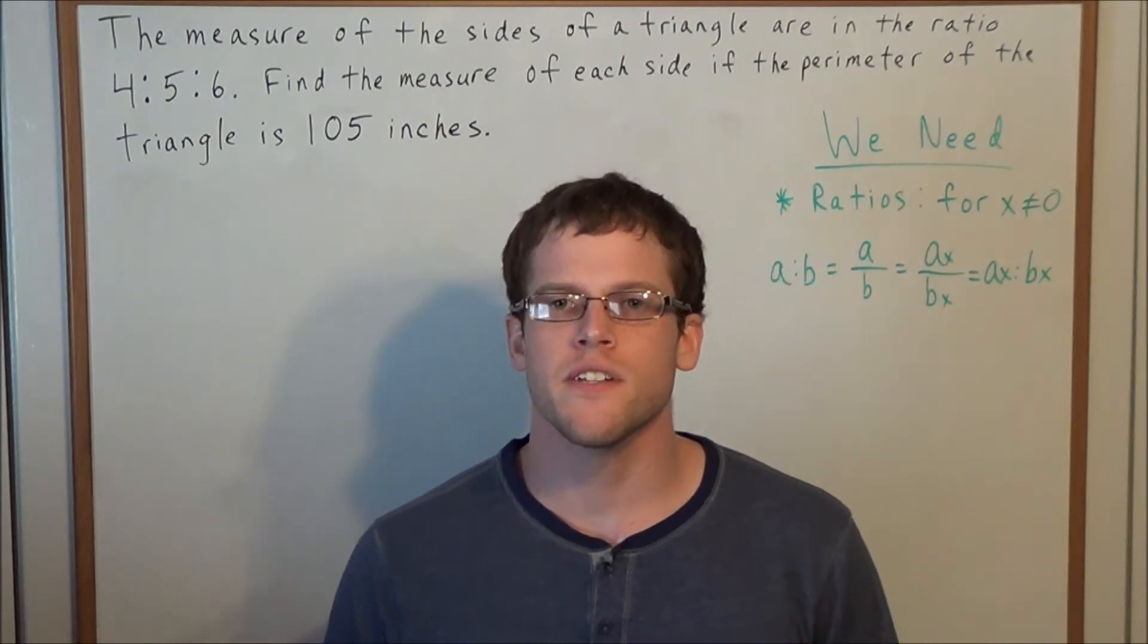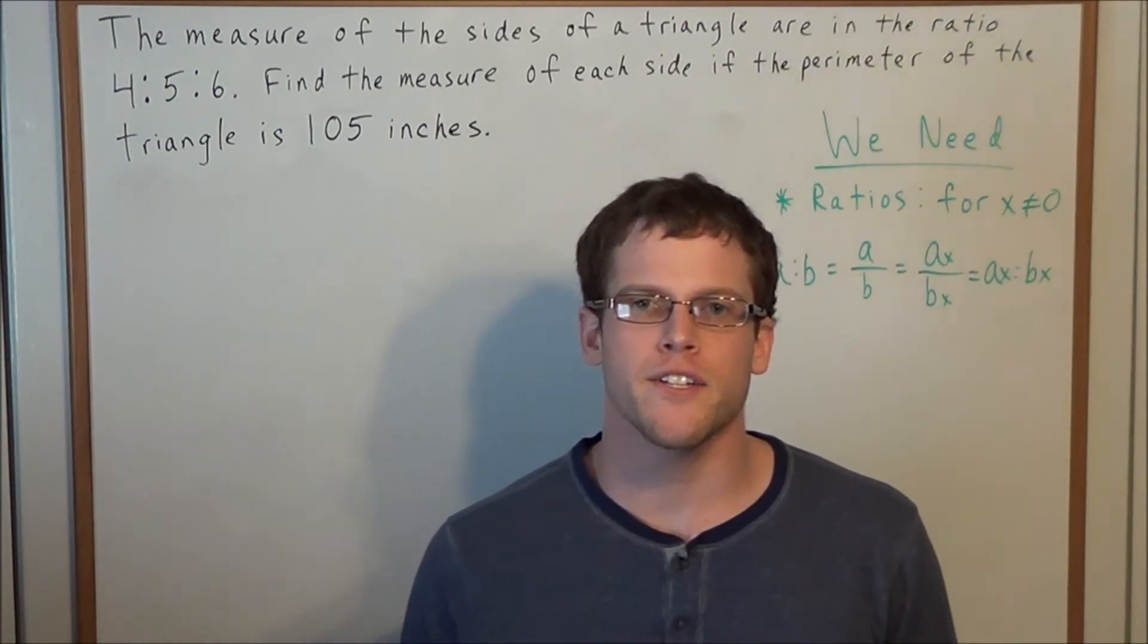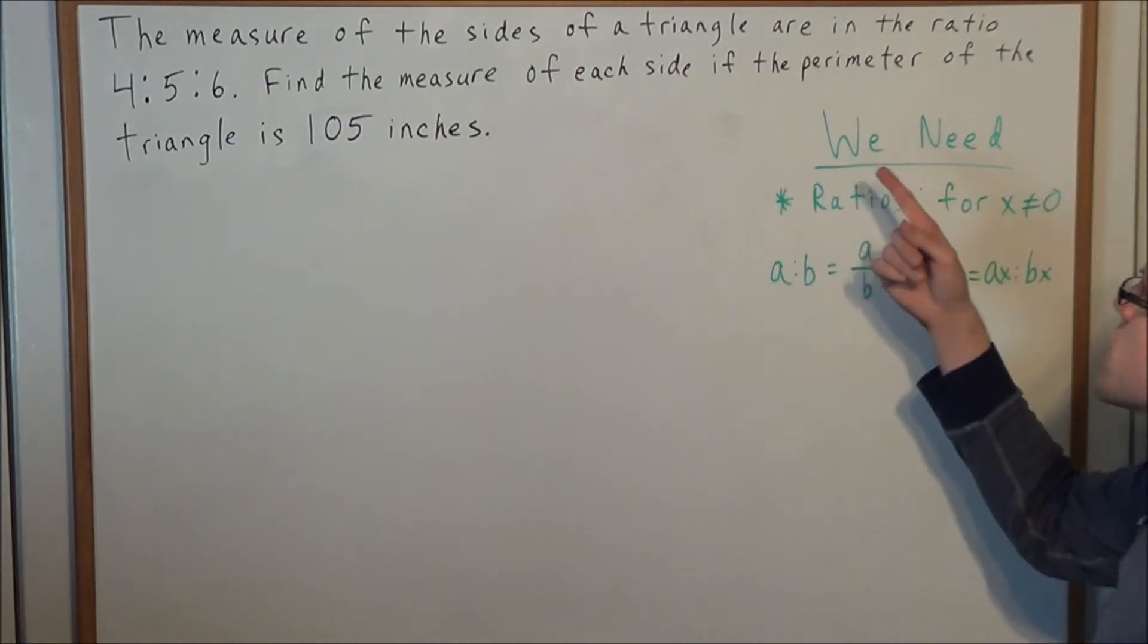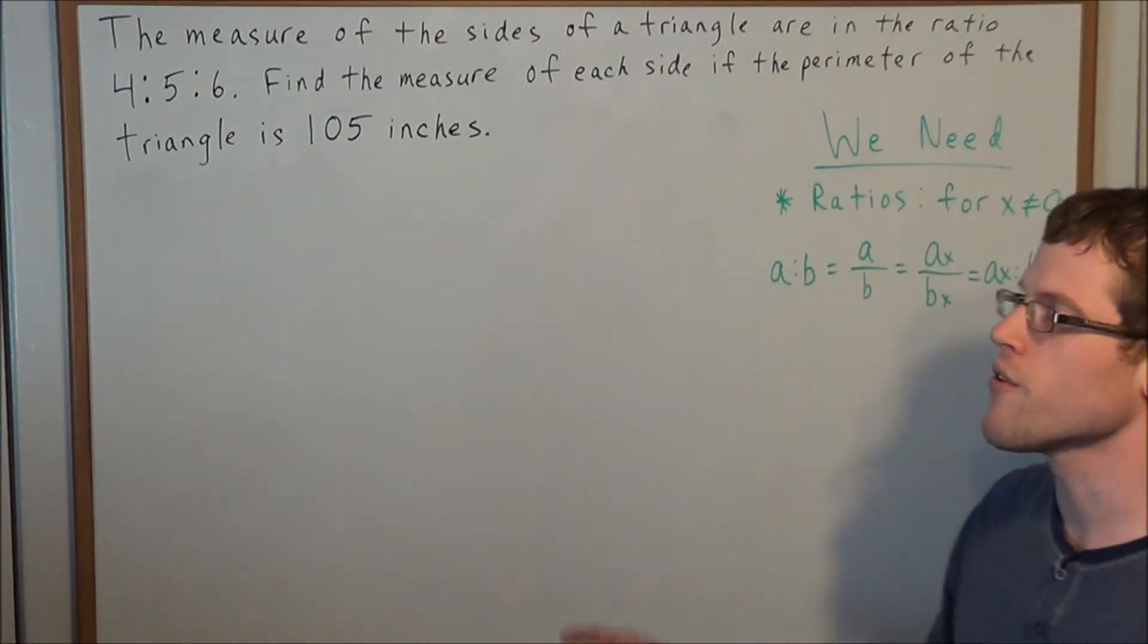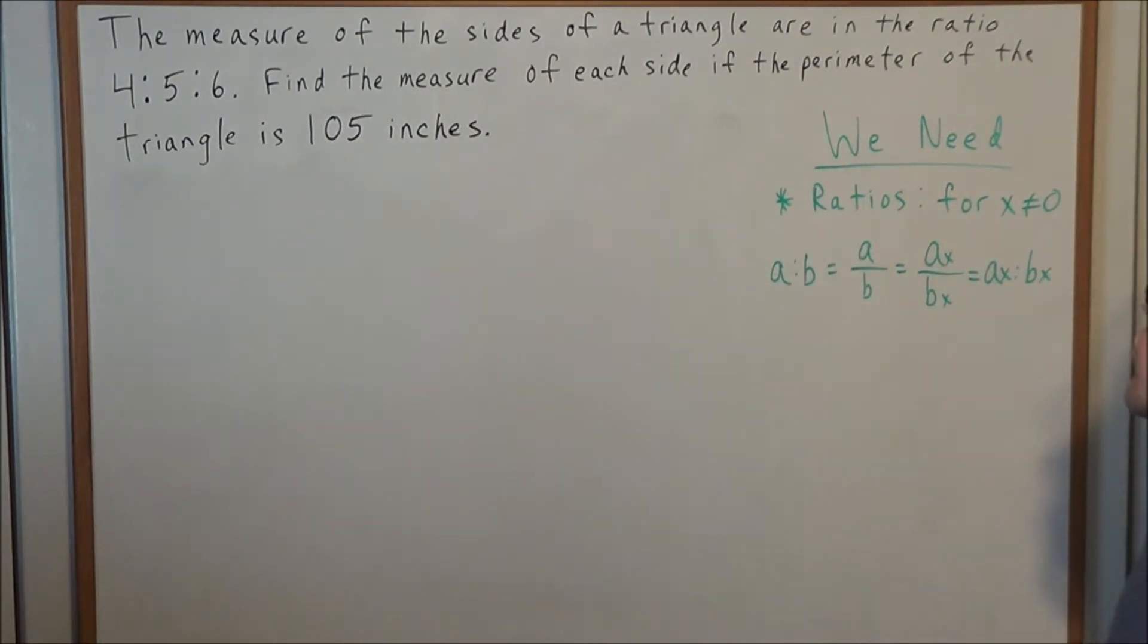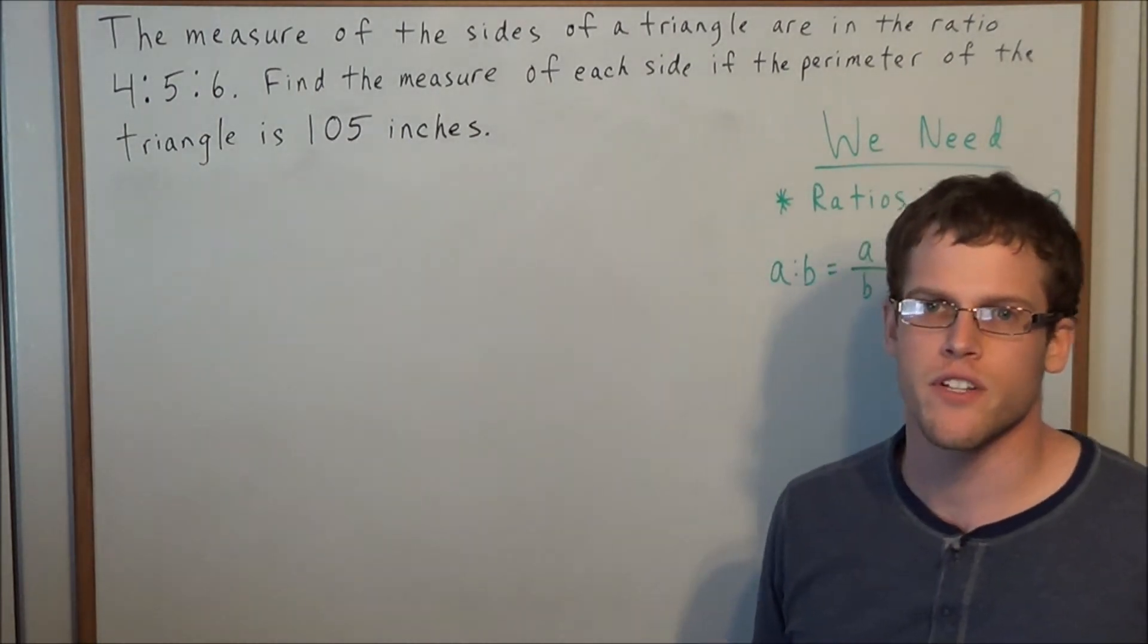Hello YouTube students, my name is Vincent and today I want to take a look at a triangle perimeter and ratio problem. The measure of the sides of a triangle are in the ratio 4 to 5 to 6. Find the measure of each side if the perimeter of the triangle is 105 inches.